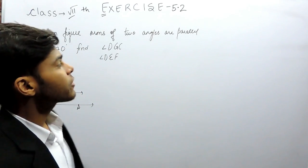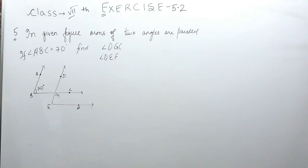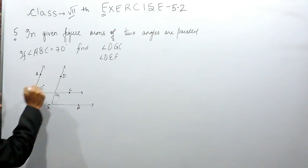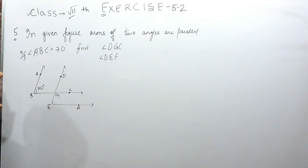Hello everyone, this is the fifth question of exercise 5.2 and we are given that these two lines and these two lines are parallel to each other.